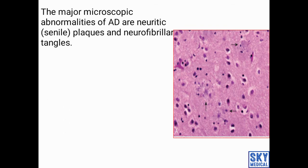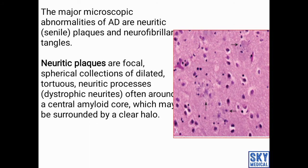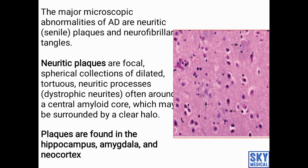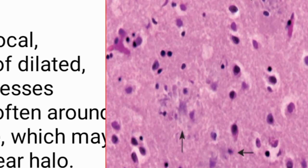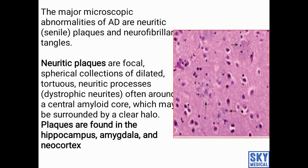Now we go to histopathology. There are two key findings: plaques and neurofibrillary tangles. Plaques are focal spherical collections of tortuous neuritic processes, often around a central amyloid core which may be surrounded by a clear halo. Amyloid deposition is seen as a dark formation in the picture. These plaques are found in the hippocampus, amygdala, and neocortex.